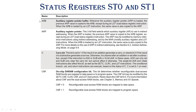When ARB is loaded by the LST instruction, the same value is also copied to ARP. ARP is the auxiliary register pointer. This 3-bit field selects which auxiliary register AR to use for indirect addressing. When ARP is loaded, the previous ARP value is copied to the ARB register, except during the LST instruction.